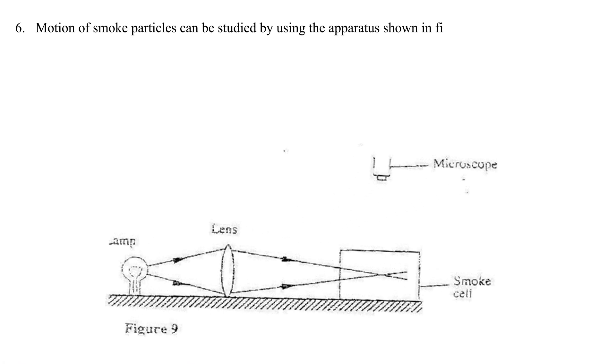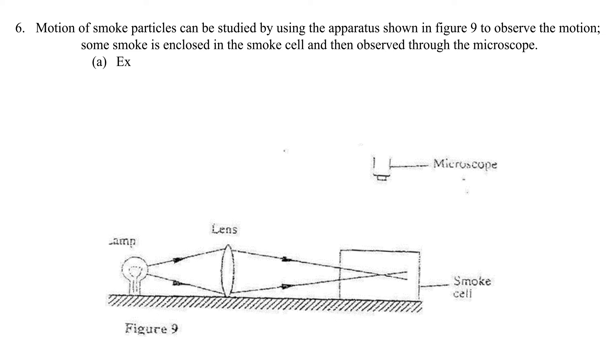Question 6: Motion of smoke particles can be studied by using the apparatus shown in figure 9 to observe the motion. Some smoke is enclosed in the smoke cell and then observed through the microscope. Part A: Explain the role of the smoke particle, lens, and microscope in the experiment.